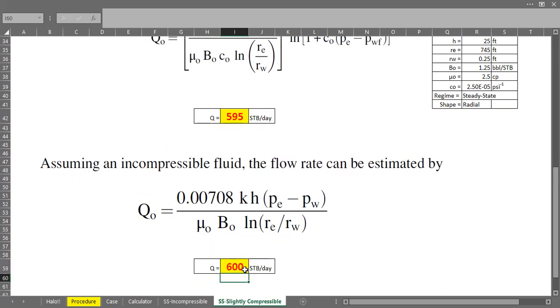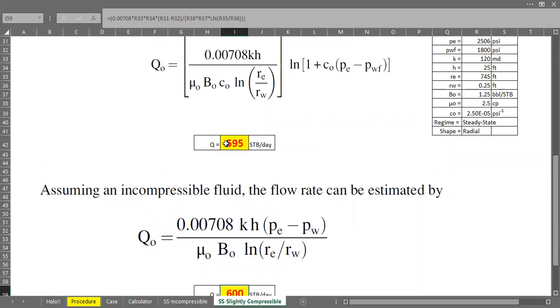All right. Okay. So you can see that the flow rate is 600 stock tank barrel per day, and it's very, very close with the case of slightly compressible. Yeah. From the term itself, you can know that it's slightly compressible. So it will differ slightly between the flow rate from slightly compressible fluid and the flow rate from incompressible fluid.